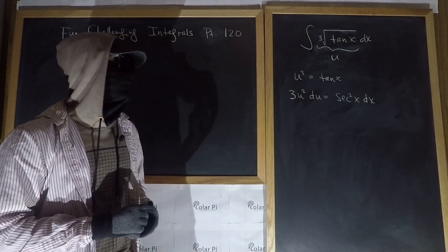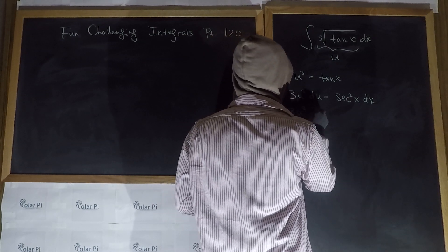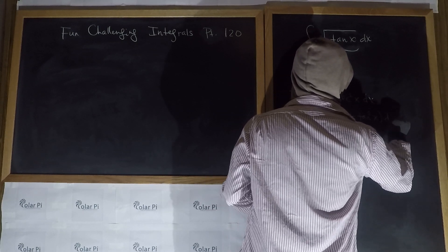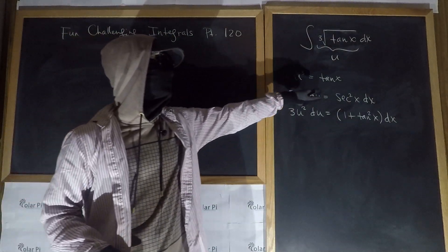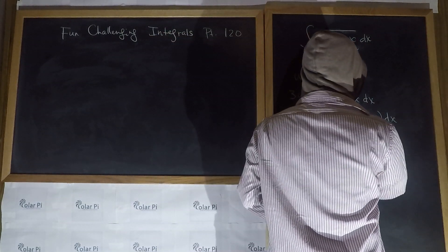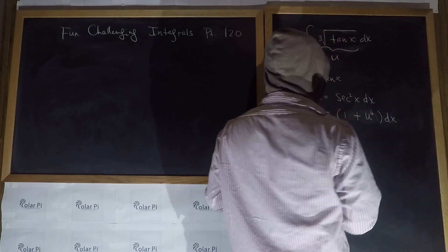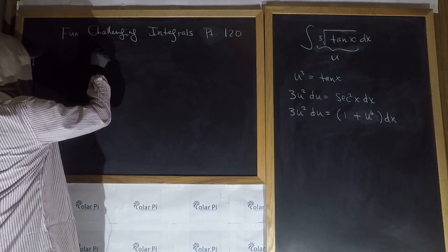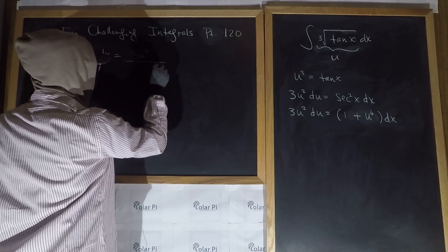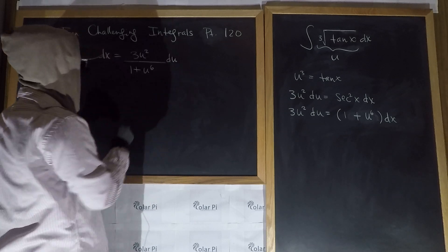From trigonometry, we know that sec²(x) equals 1 plus tan²(x). So we can write 3u² du equals (1 + tan²(x)) dx. But since tan(x) equals u cubed, tan²(x) is u to the sixth. Solving for dx, we get dx equals 3u² divided by (1 + u⁶) du.